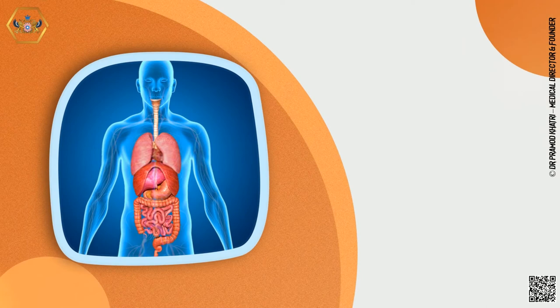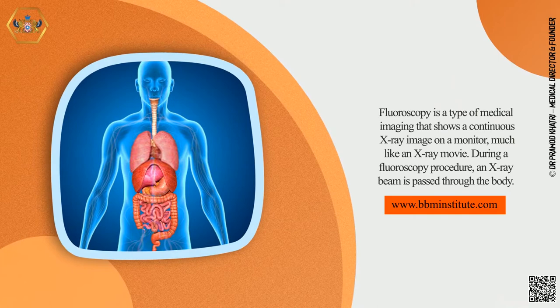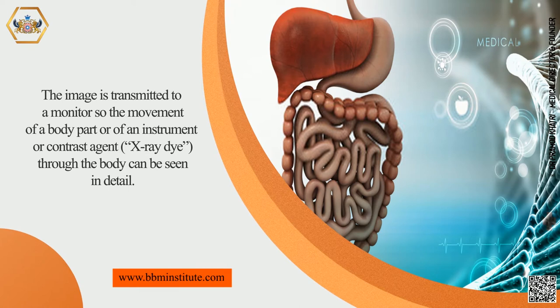Fluoroscopy is a type of medical imaging that shows a continuous x-ray image on a monitor, much like an x-ray movie. During a fluoroscopy procedure, an x-ray beam is passed through the body. The image is transmitted to a monitor so the movement of a body part, or of an instrument or contrast agent (x-ray dye) through the body, can be seen in detail.